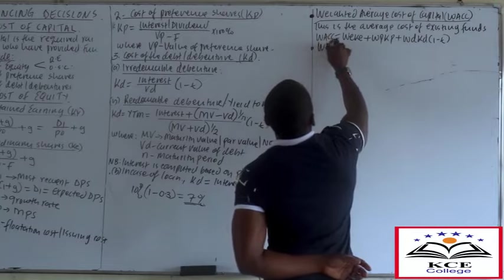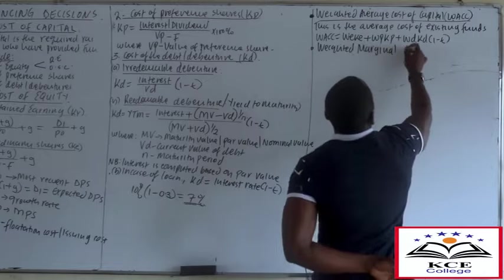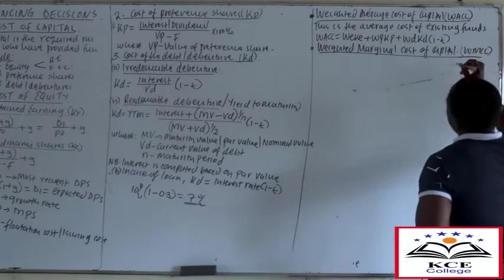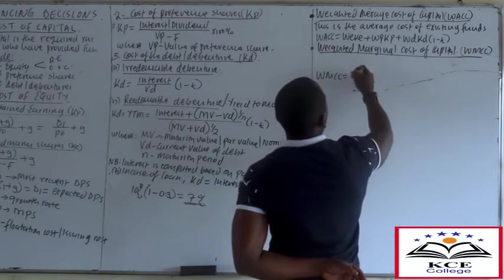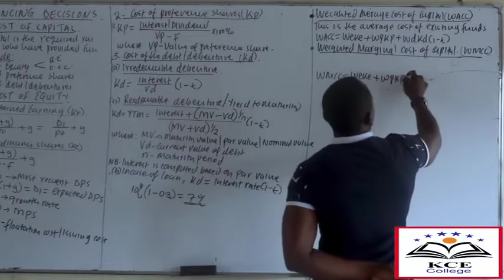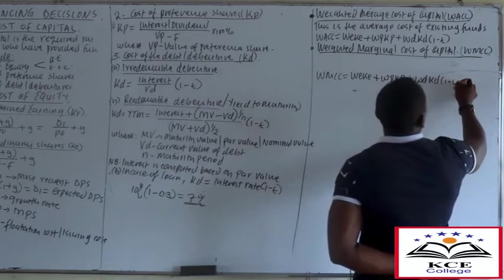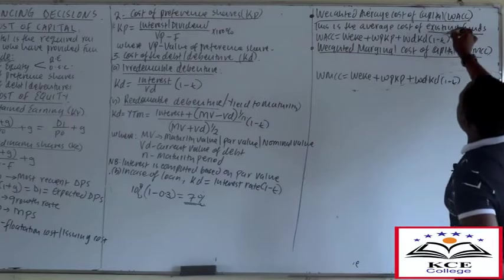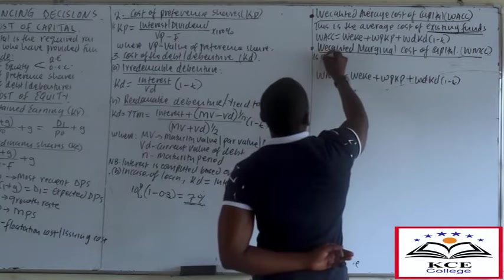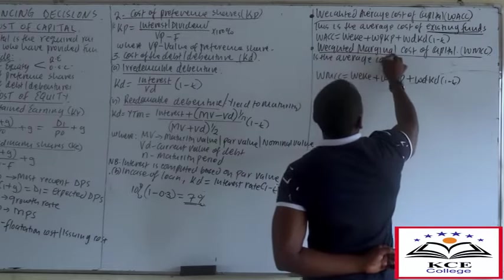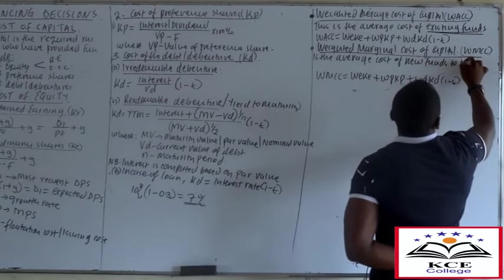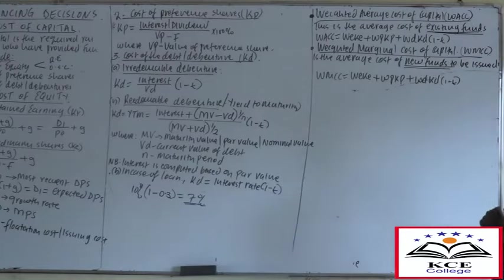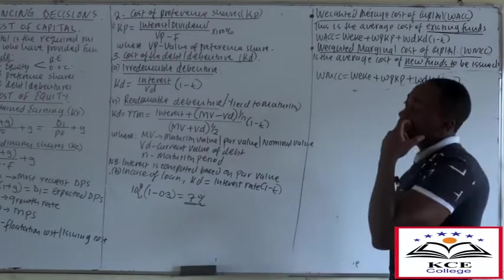We also have the Weighted Marginal Cost of Capital, WMCC. The formula is the same as WACC. The difference is that WACC is the average cost of existing funds, while WMCC is the average cost of new funds to be raised. WACC is used as a discounting factor when evaluating existing projects; WMCC is used when evaluating new projects.